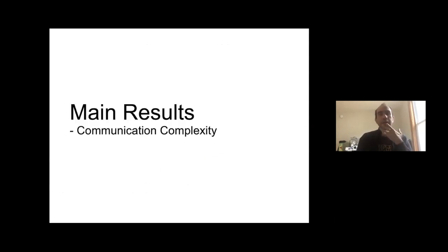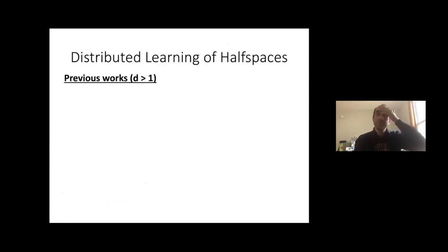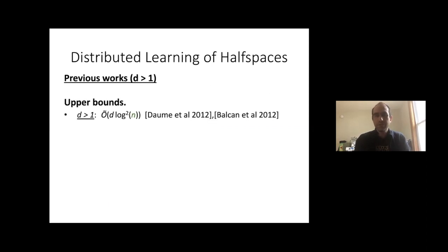Now let me state the main results. Consider the distributed learning of half-spaces problem. In dimension 1, this is like the Greater-Than problem, so it costs log n or log log n bits. The interesting case is dimension larger than 1.